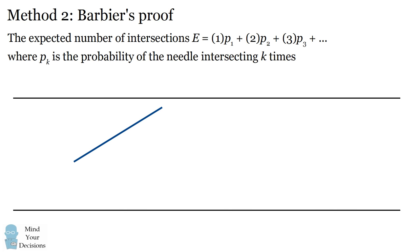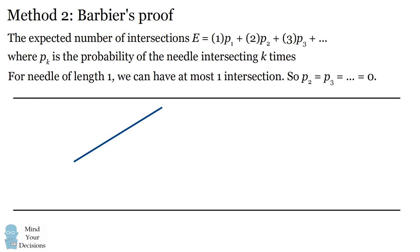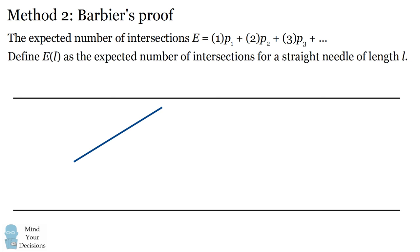For a needle of length one, this expression simplifies greatly — a needle of length one can have at most one intersection, so the probabilities of two, three, or more intersections are all zero. There is the pedantic point that the needle could fall exactly horizontally on one of the lines — that would be infinitely many intersections — but this happens with measure zero, so we can ignore it. If we define E of l as the expected number of intersections for a straight needle of length l, then E of one equals p one — the expected number of intersections for a needle of length one equals exactly the probability we want.